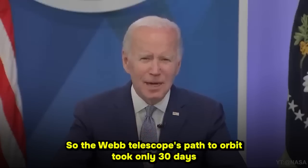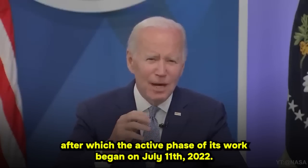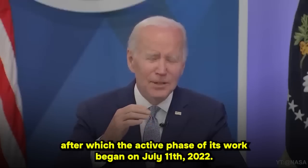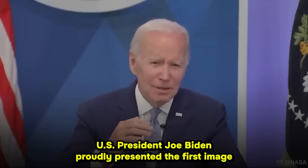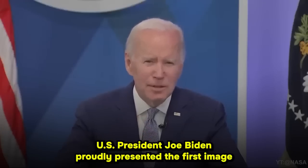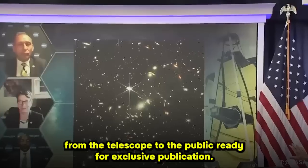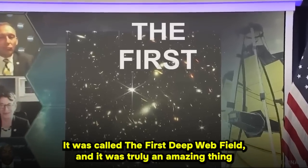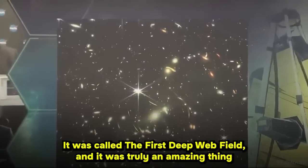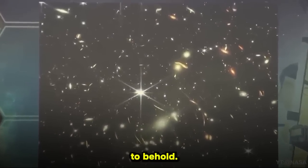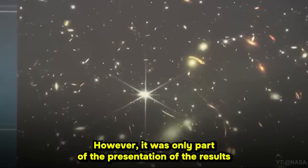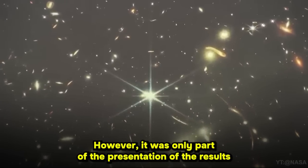The Webb telescope's path to orbit took only 30 days, after which the active phase of its work began. On July 11, 2022, U.S. President Joe Biden proudly presented the first image from the telescope to the public, ready for exclusive publication. It was called the first deep web field, and it was truly an amazing thing to behold. However, it was only part of the presentation of the results of the telescope.